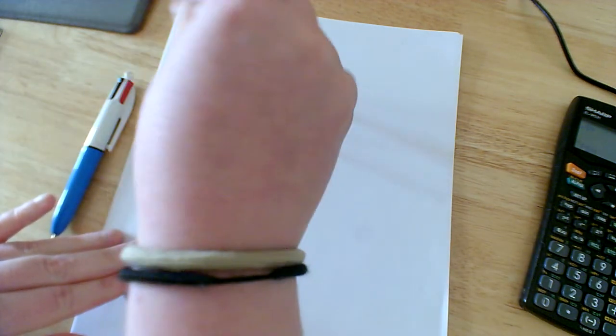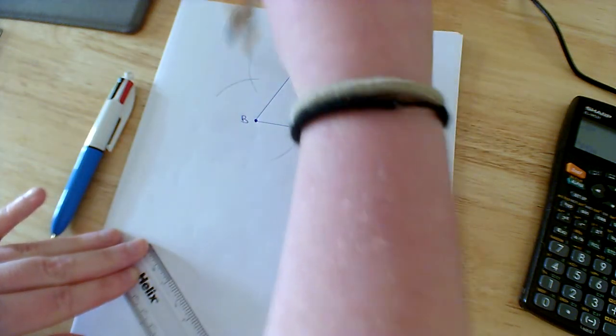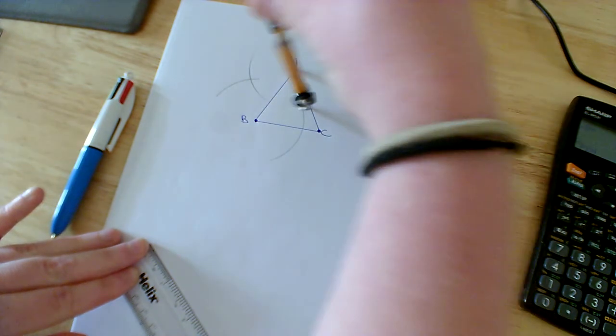So I draw my arc up here and down here, and then I go to A and do the exact same so I draw my arc here. So they're after intersecting here.